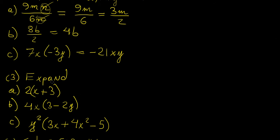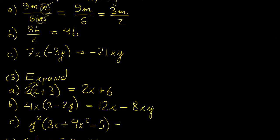Now we expand the expressions. You multiply the term outside by each term inside the brackets: 2 times x gives 2x, plus 2 times 3 gives 6. Then 4x times 3 gives 12x, and minus 4 times 2y gives minus 8xy. For the expression with y squared: y squared times 3x gives 3xy squared, plus y squared times 4x squared gives 4x squared y squared, and minus 5y squared.